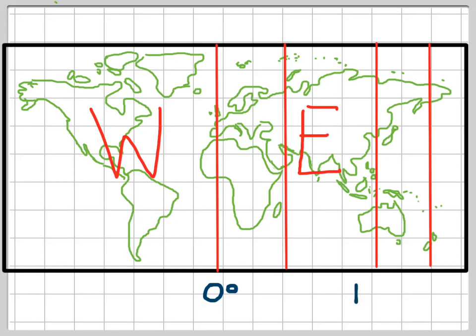So this line, which is about at 120 degrees, we call it 120 degrees east. In the same way, we have lines of longitude in the western hemisphere. And this line here is about 10 degrees west.